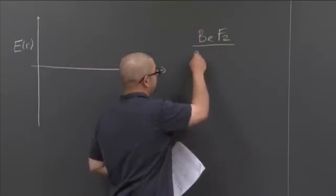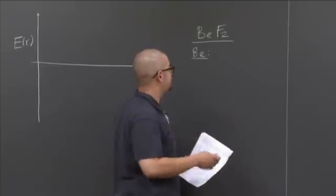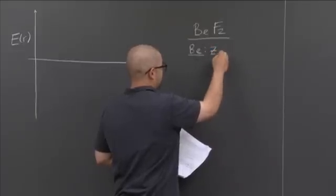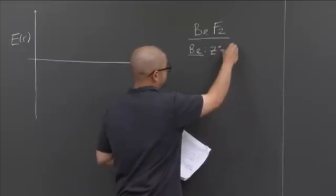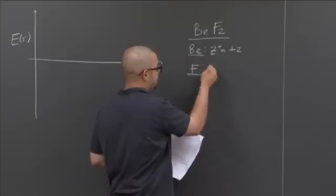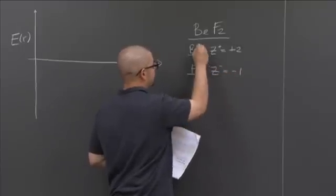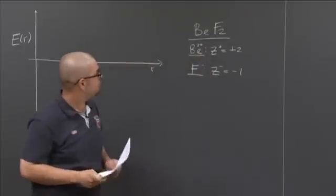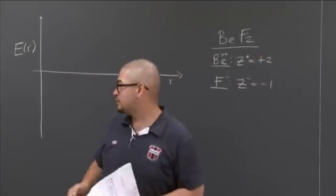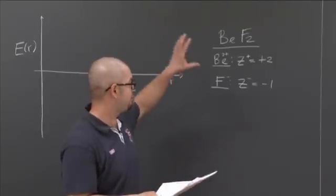I know that beryllium forms a cation that is 2 plus, so it has a positive charge of 2, which means it lost two electrons. So Z plus for beryllium is plus 2. For fluorine, when it's in the anion state, my charge is equal to minus 1. So 2 plus and minus 1. With this in mind, you can take this and it will help you solve the problem.